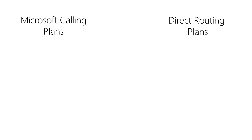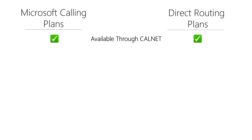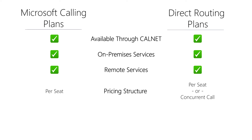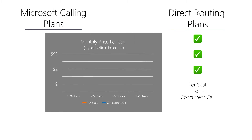Both types of plans are available through multiple CalNet vendors, and both are fully compatible for users who are working in the office and users who are working from home. One of the differences between the two is the pricing structure. All of Microsoft's calling plans follow a per-seat price model. However, direct routing plans may offer either per-seat or concurrent call pricing. It's worth exploring which price model may be best for your organization.